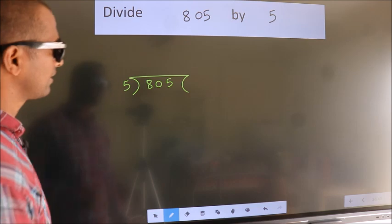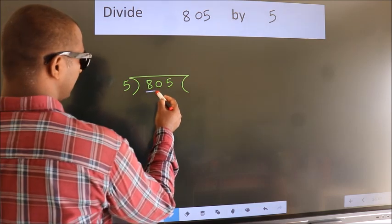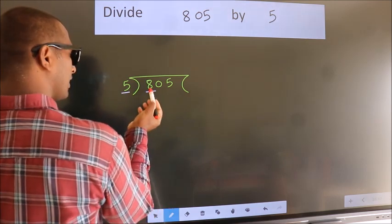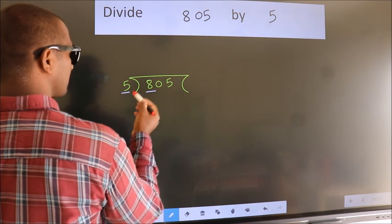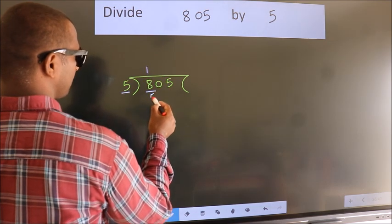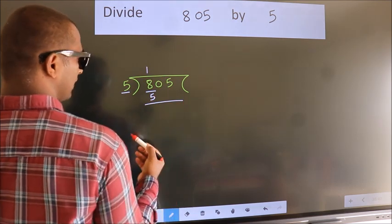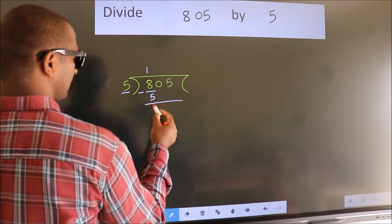Next, here we have 8, here 5. A number close to 8 in 5 table is 5 once 5. Now, we should subtract. We get 3.